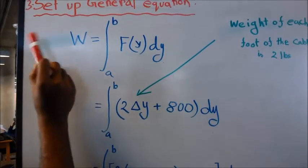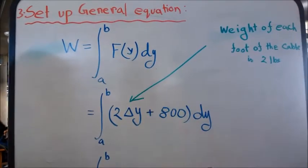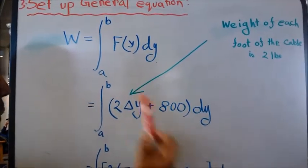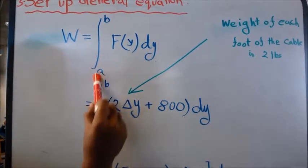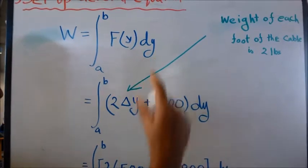In part three, set up the general equation. We're going to take the integration of the force needed to pull the bucket up. A to B is our limit, and DY is the change in distance. That's how we will get the work.